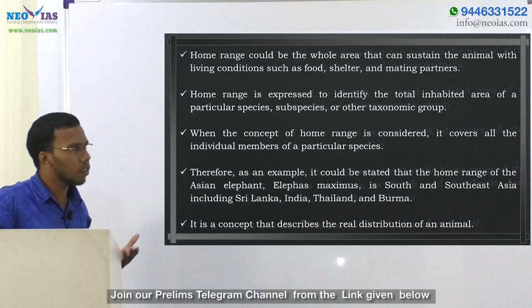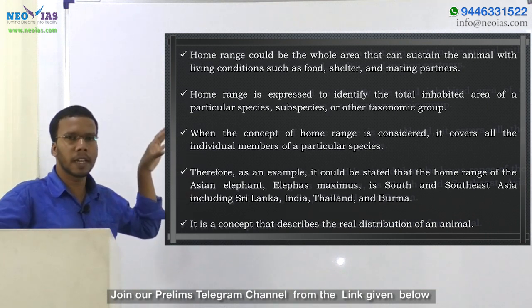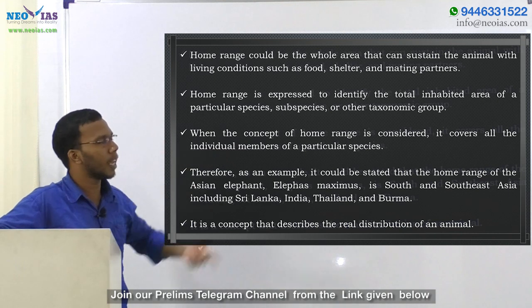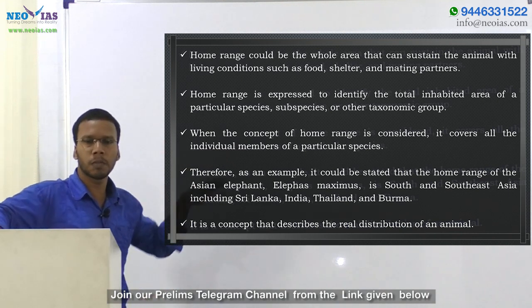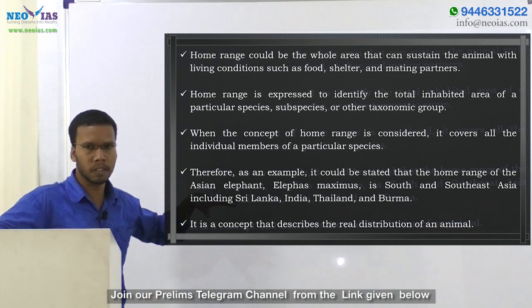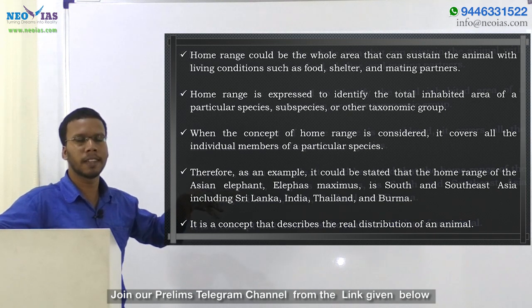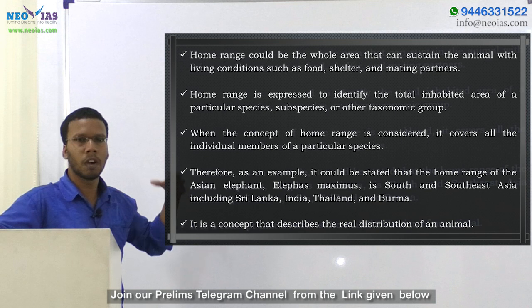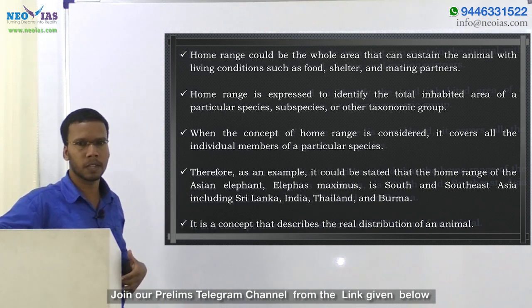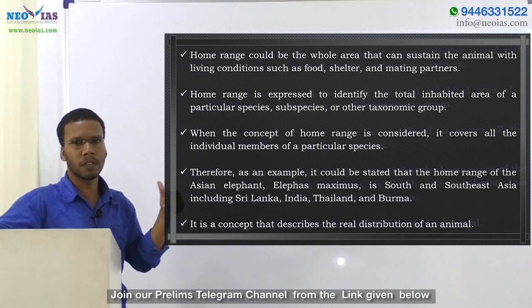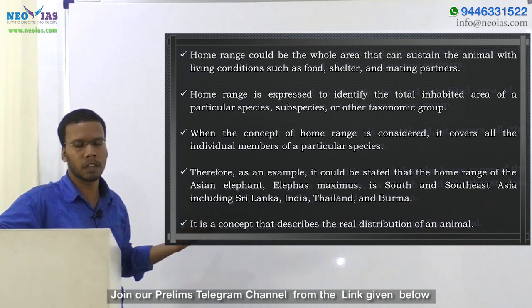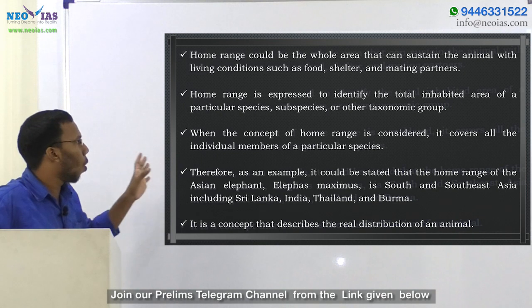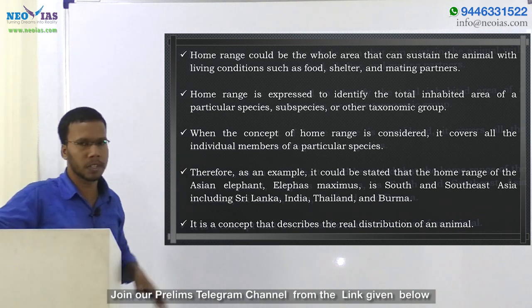Home range is expressed in order to identify the total inhabited area of a particular species, subspecies, or other taxonomy group. It depends on the species — for example, we can speak of the home range of the tiger, or the home range of the lion. The entire area used by that species is known as home range, and it covers all the individual members of a particular species.